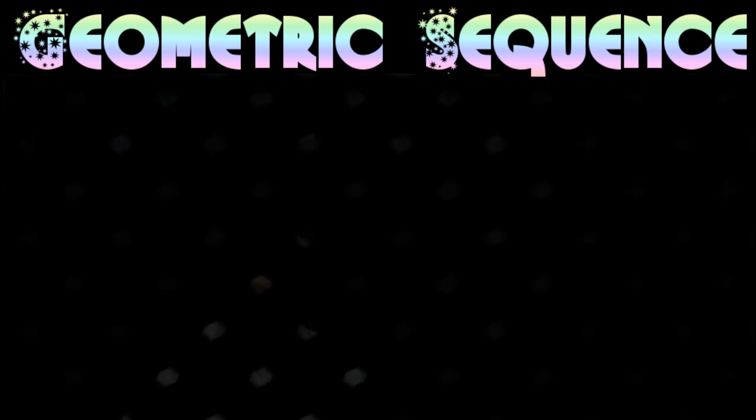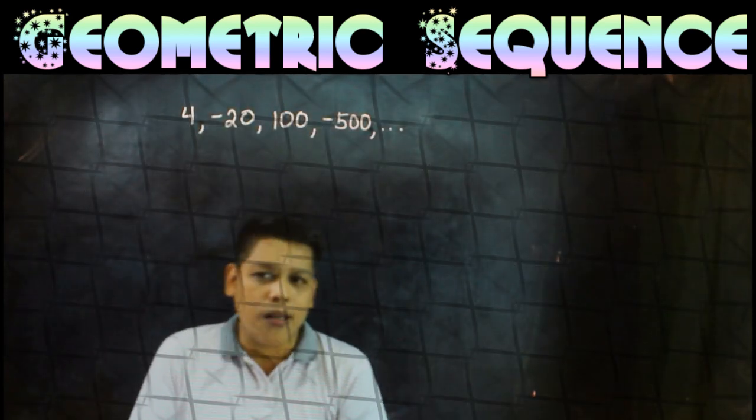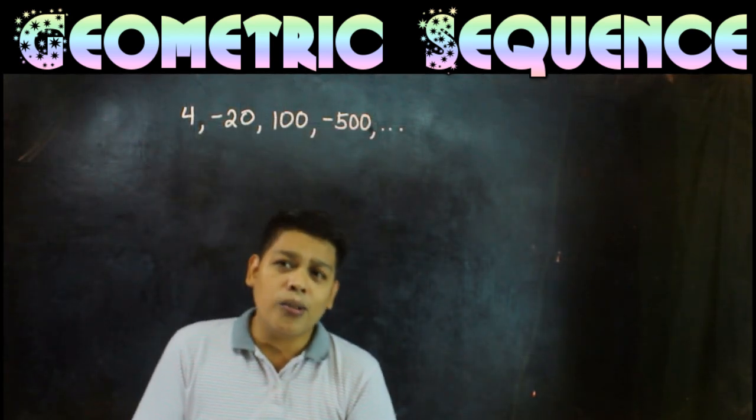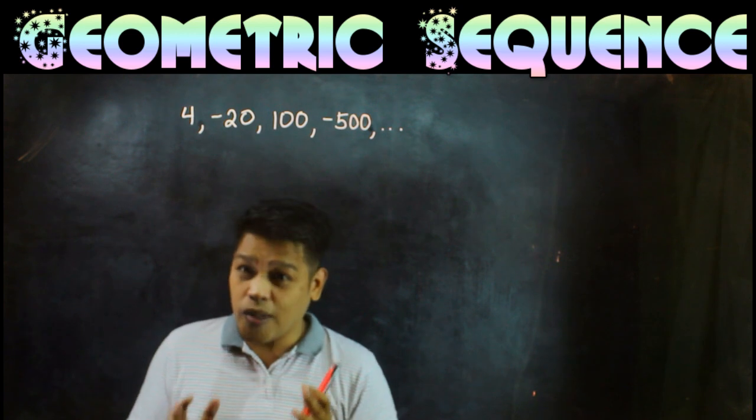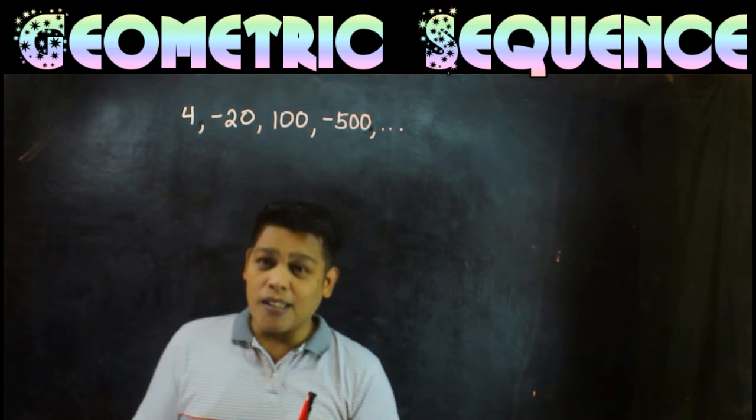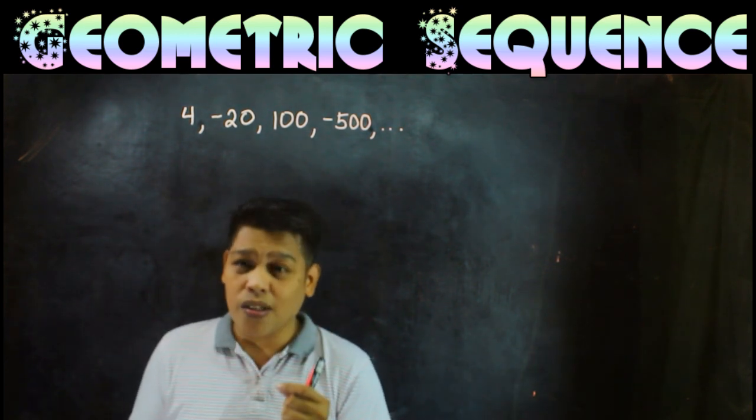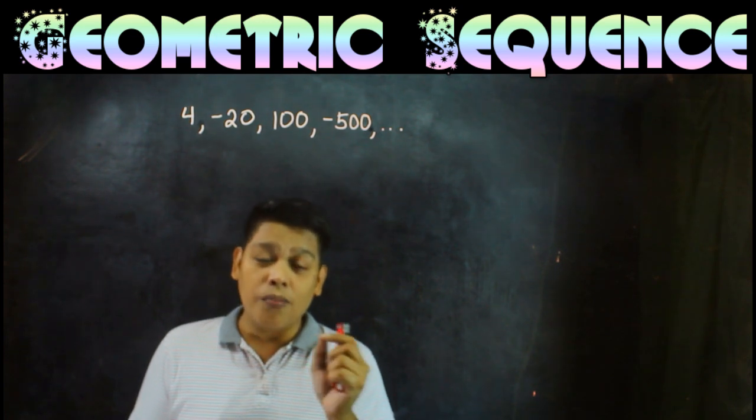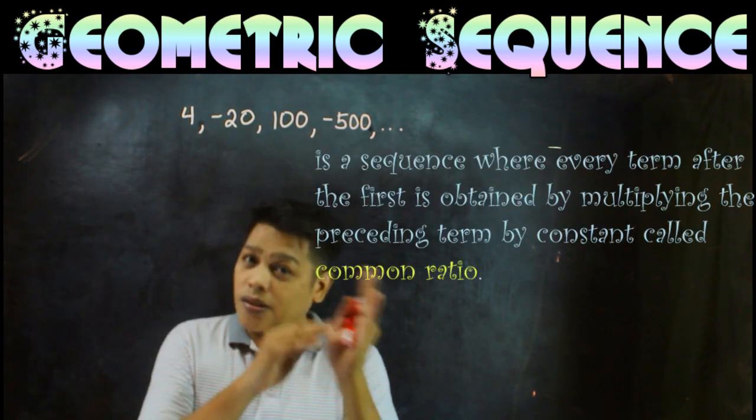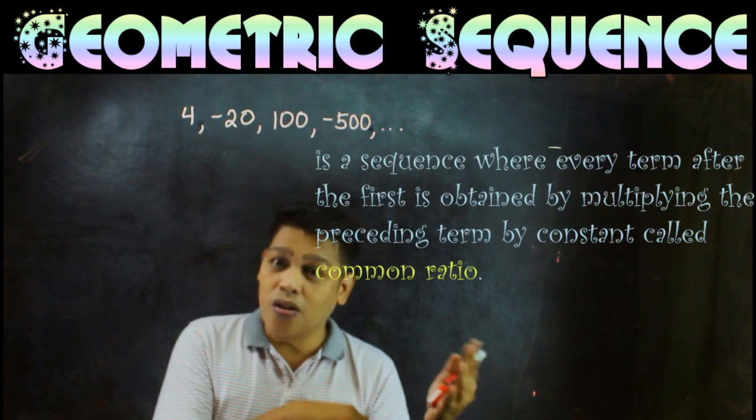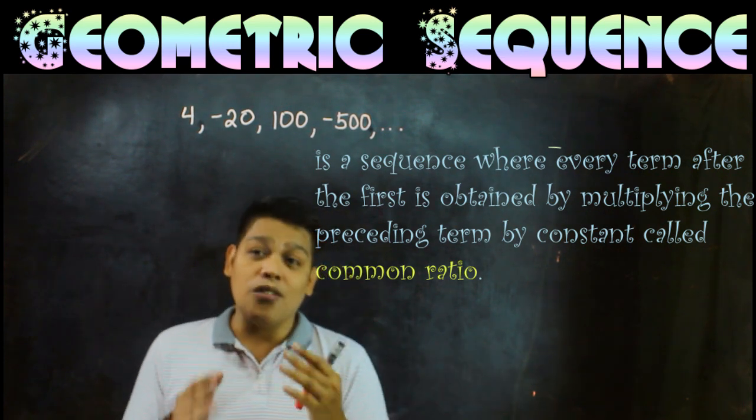Let's go to this example. So 4, negative 20, 100, negative 500, and so on. Is this an example of geometric sequence? We'll try to find if it has a common ratio. If you multiply the preceding term to the next term by the same amount, the common ratio, then it is a geometric sequence.